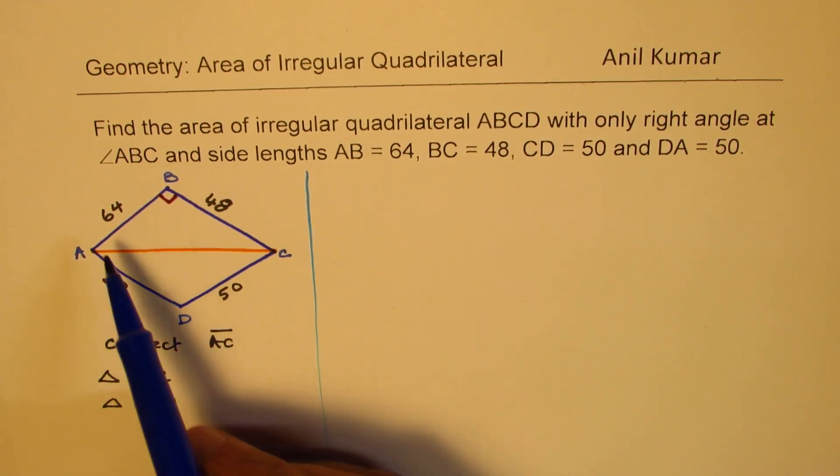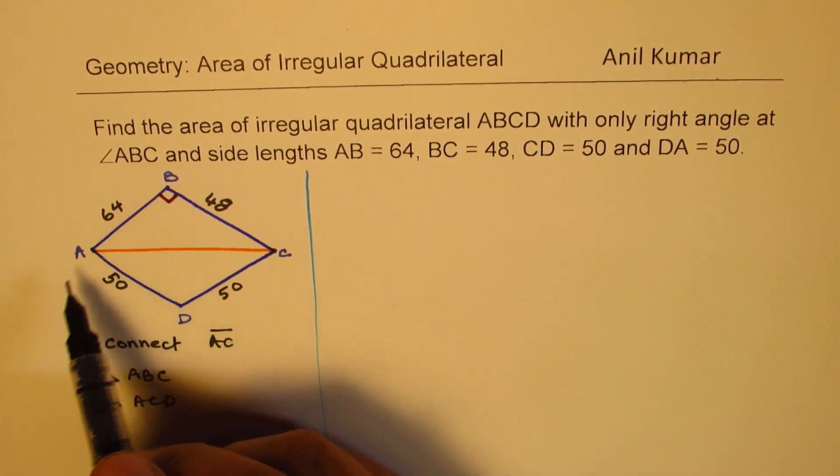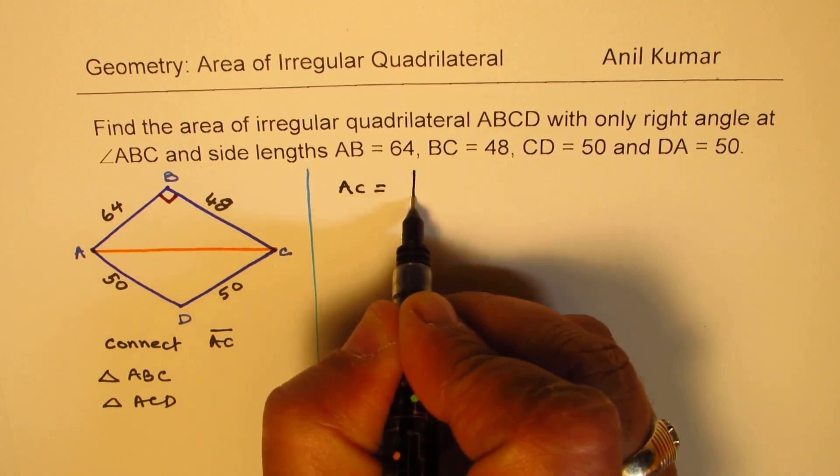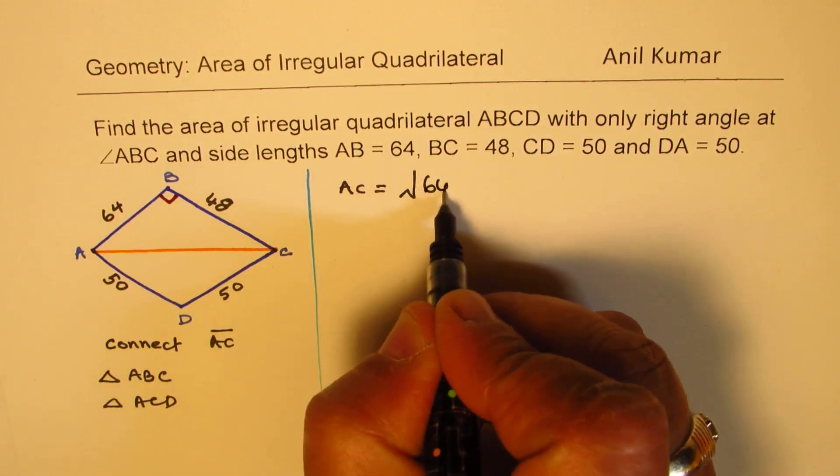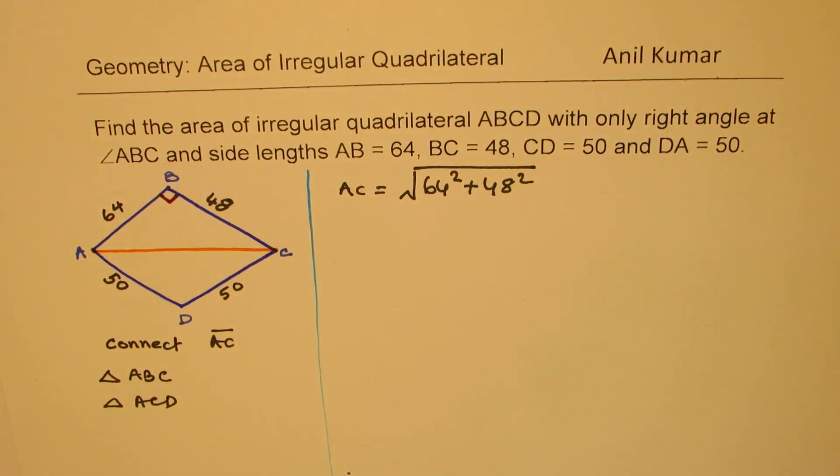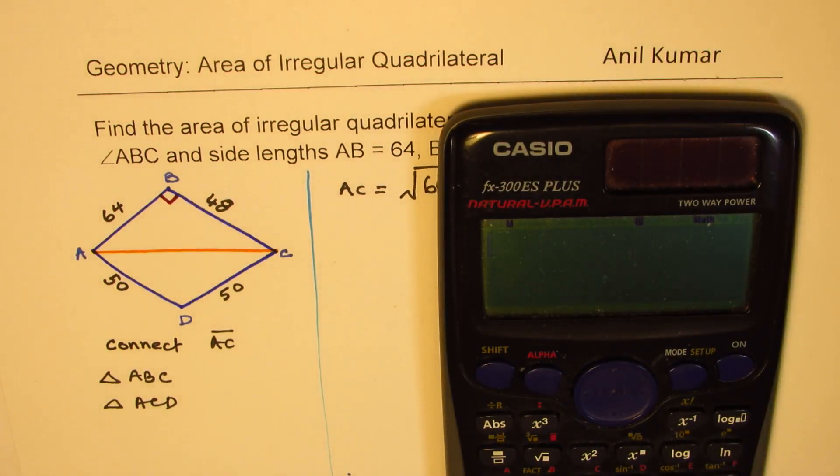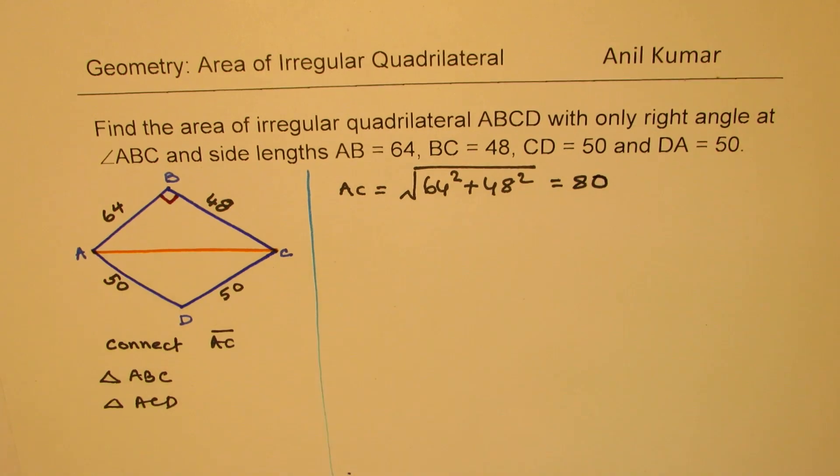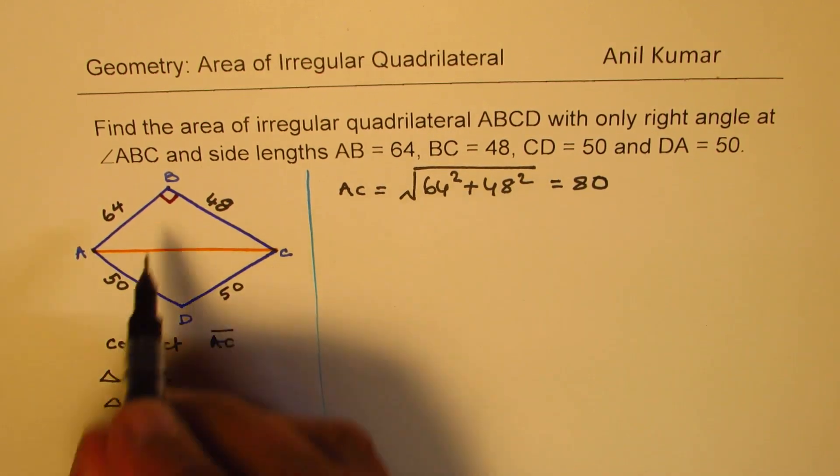Now, since we are given 64 and 48 as the two sides, AB and BC, with the right angle at B, we can say A to C is basically equal to square root of 64 square plus 48 square. So these are actually good numbers which give you a perfect Pythagorean triple, but let's figure it out. Square root of 64 square plus 48 square, that gives you 80 as your answer. So it is 80. So AC we found as 80.